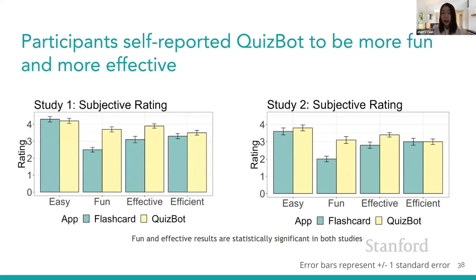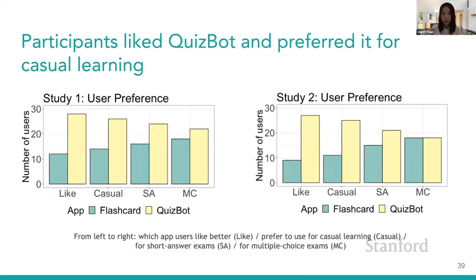On a scale of 1 to 5, I asked people to rate QuizBot and the flashcard app in terms of ease of use, fun, effectiveness, and efficiency. QuizBot was rated as significantly more fun and more effective than the flashcard app in both studies, and on par with the flashcard app in terms of ease of use and efficiency. More than 68% of users in both experiments liked QuizBot, and more than 63% preferred using it for casual learning, though the percentage dropped for exam preparation, likely due to QuizBot's lower efficiency.